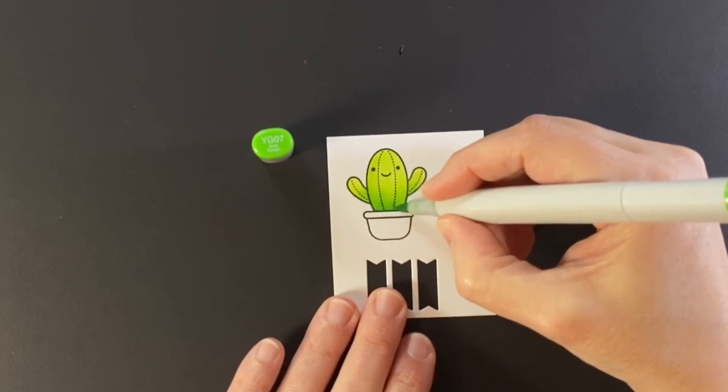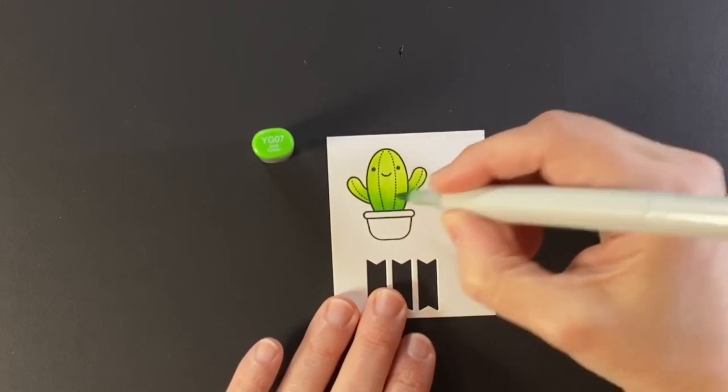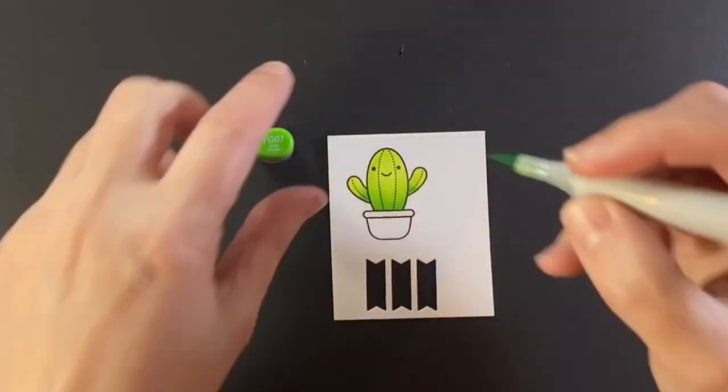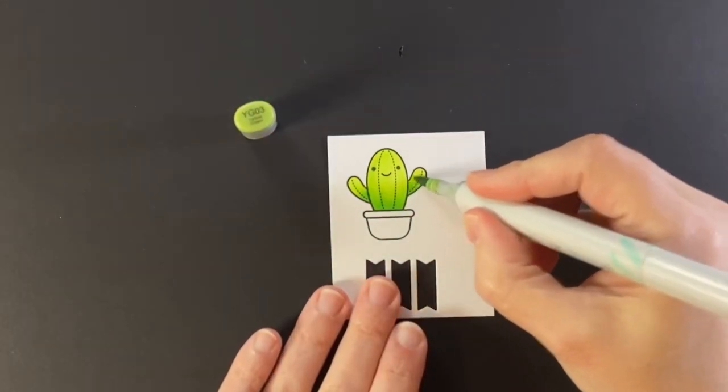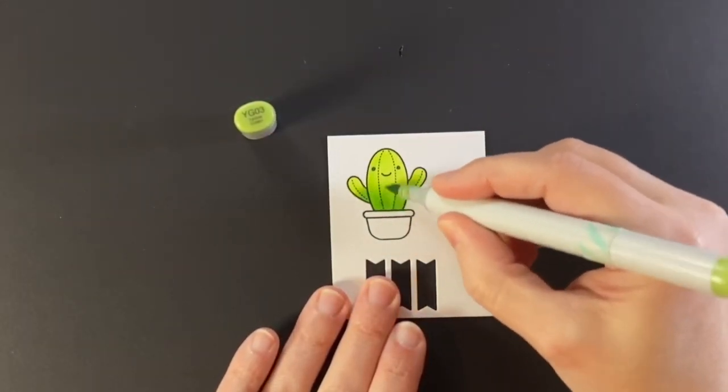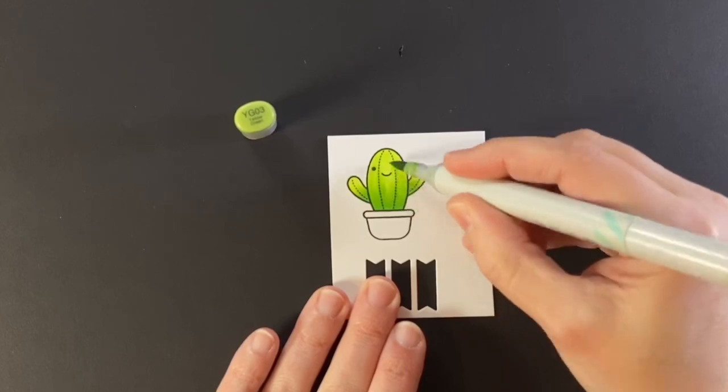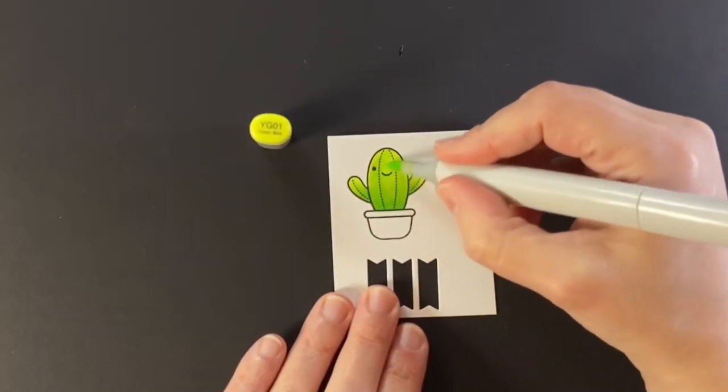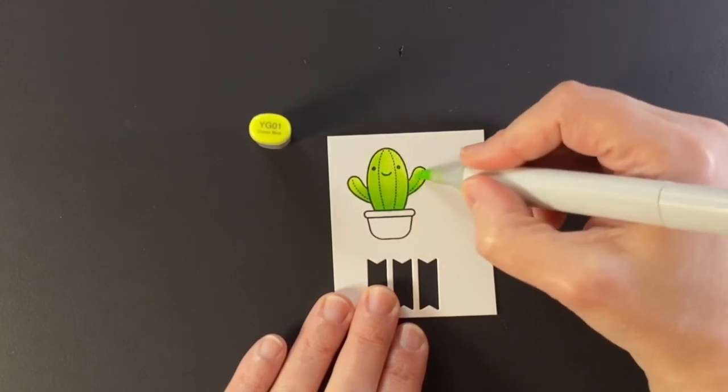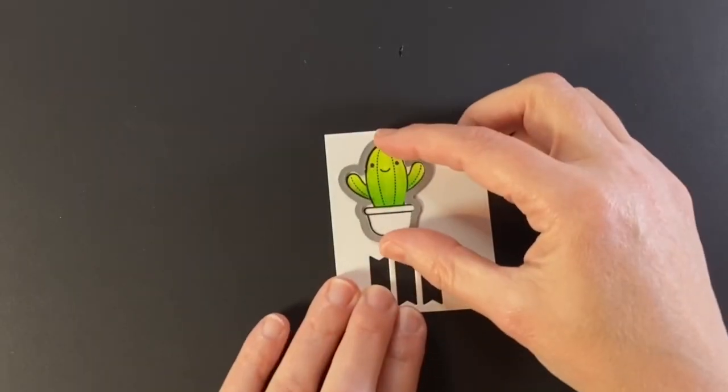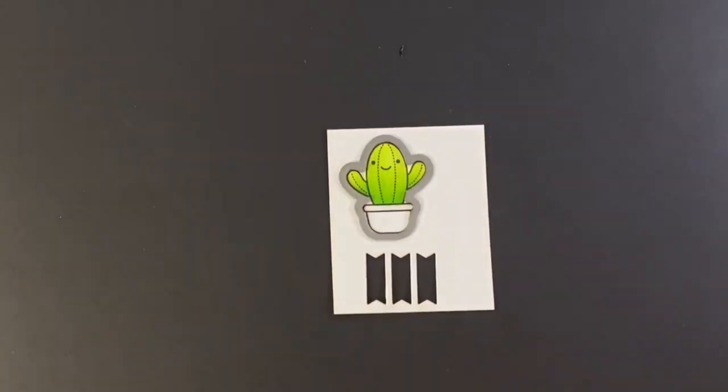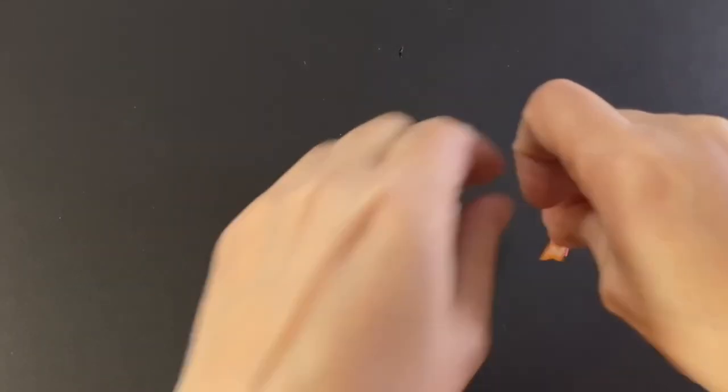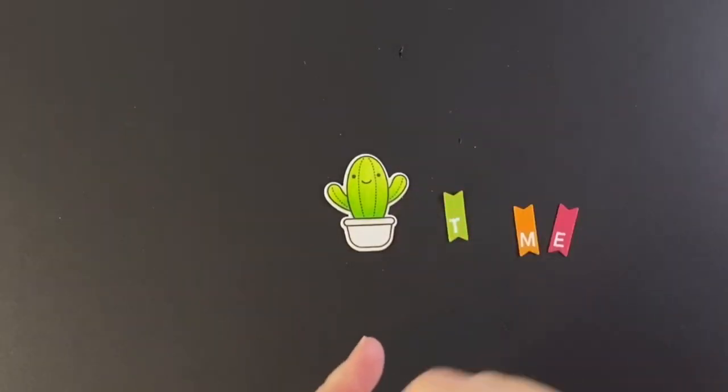I held off coloring the pot, I hadn't decided yet what color that would be. So I'm just blending everything back up into the lightest color and this guy is all set and ready to be cut out with the coordinating die. There he is and here are his little banners.